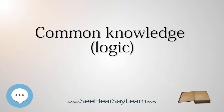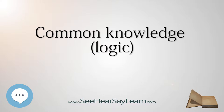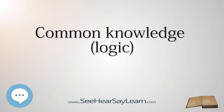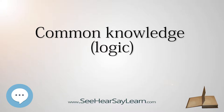Common knowledge is a special kind of knowledge for a group of agents. There is common knowledge of P in a group of agents G when all the agents in G know P, they all know that they know P, they all know that they all know that they know P, and so on ad infinitum.